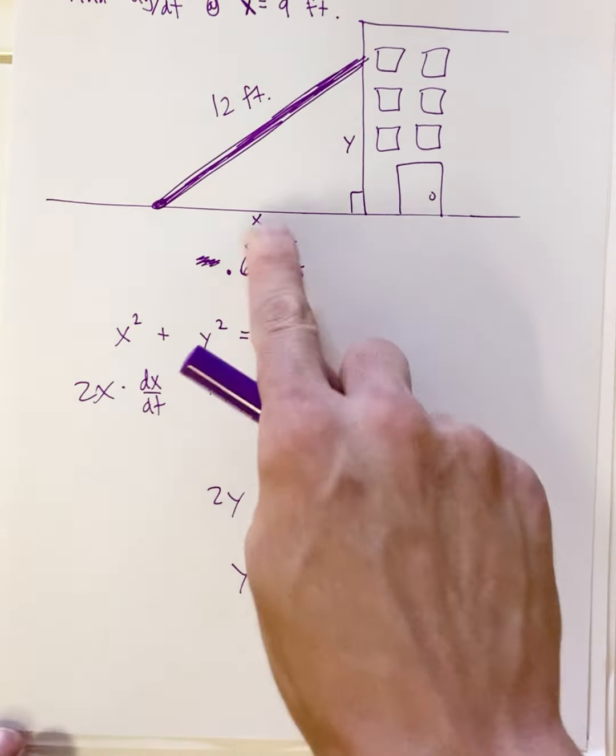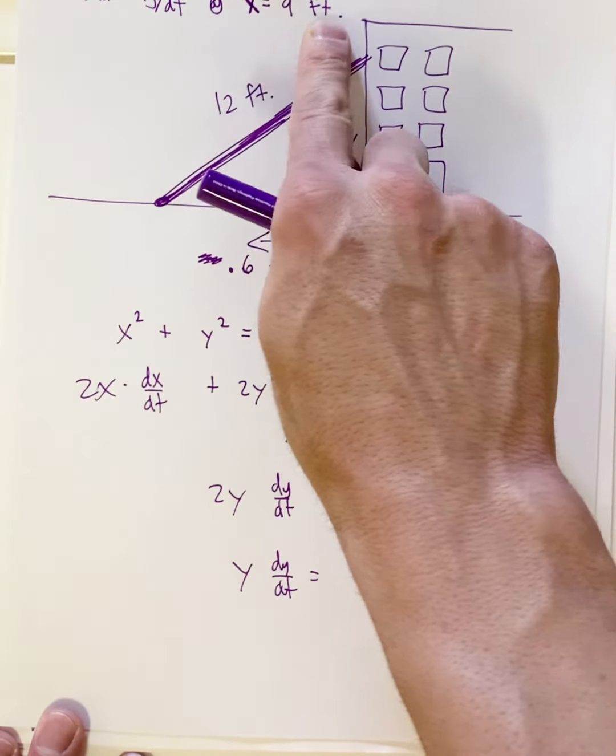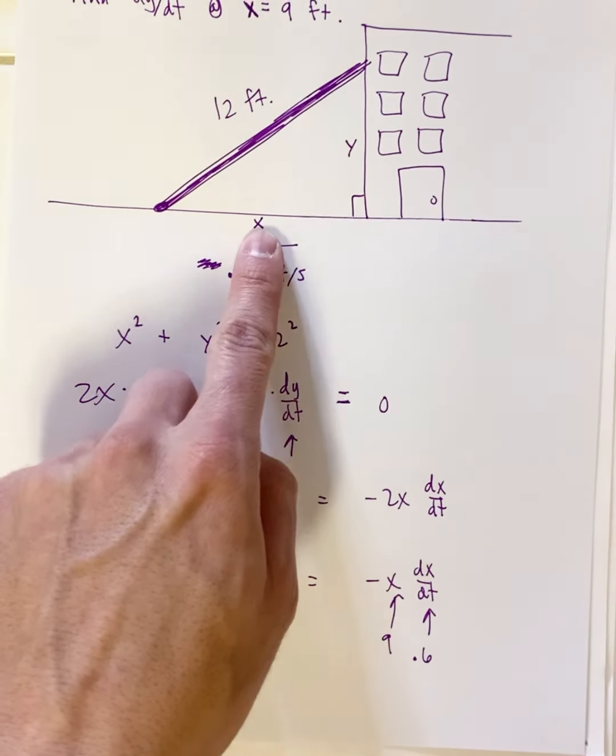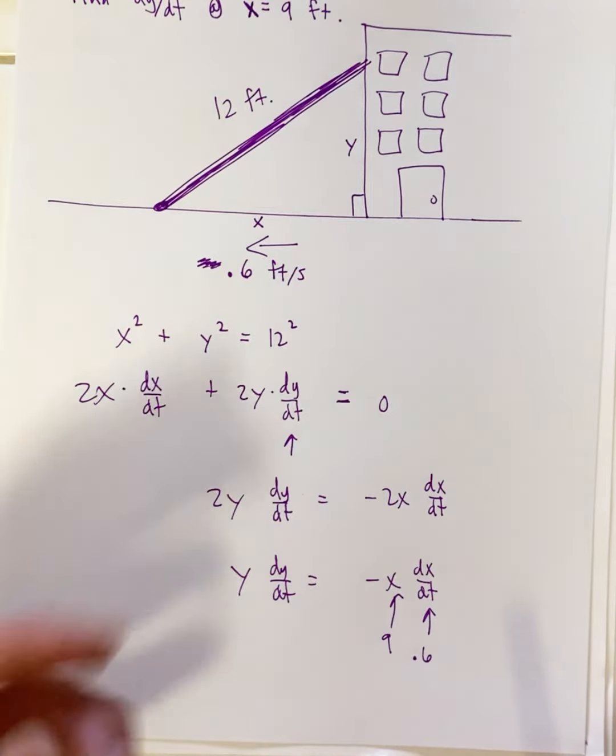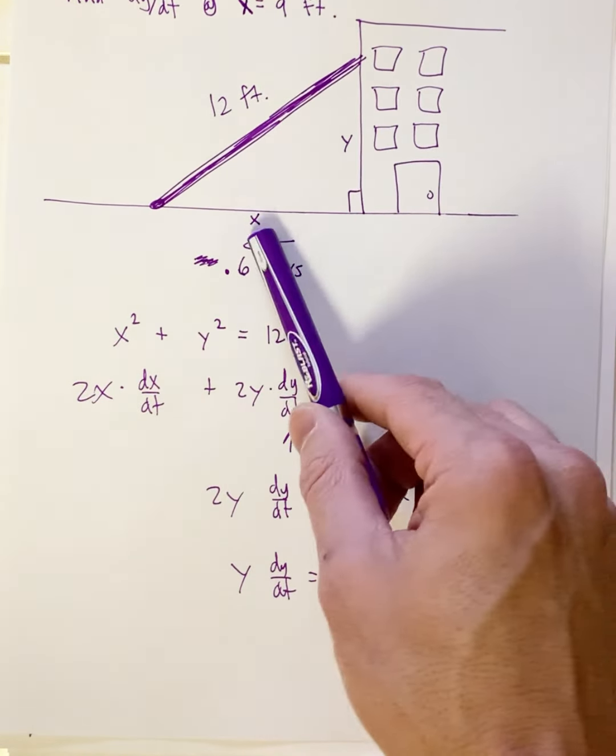What's x? x is the specific length that they want us to use. They want us to use x is 9, so we know that x is 9. But the question is, when x is 9 at that moment in time, how much is y? So I need to know what y is when x is 9.